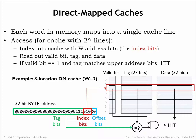So the cache hardware in this example is an 8-location by 60-bit SRAM plus a 27-bit comparator and a single AND gate. The cache access time is the access time of the SRAM plus the propagation delays of the comparator and AND gate — about as simple and fast as we could hope for.